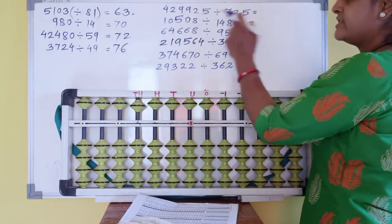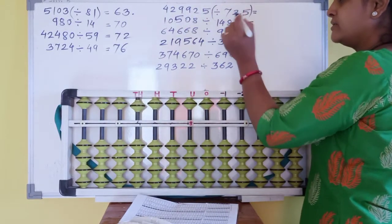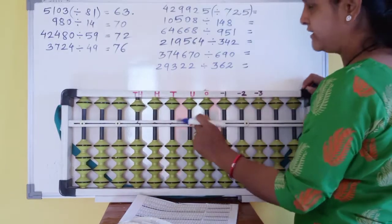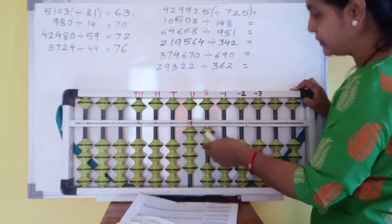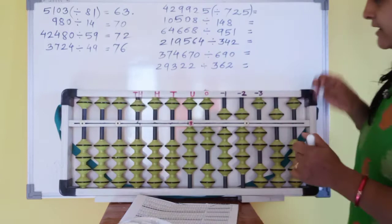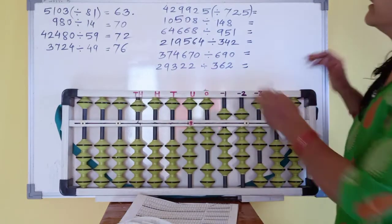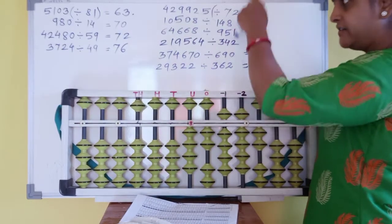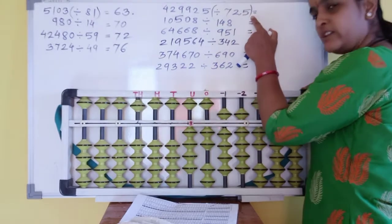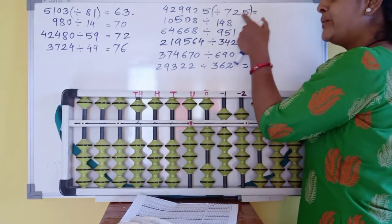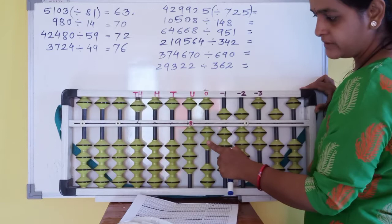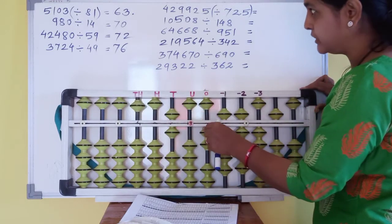Here six digits and division sums. Together here four. Five minus four is one. Then 4, 2, 9, 9, 2, 5 divided by seven hundred twenty-five. We give all these numbers same to all these digits. Seven stable forty-two. Six times — seven six is forty-two.